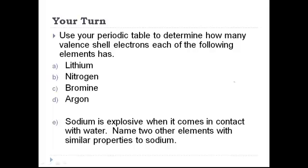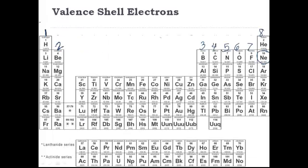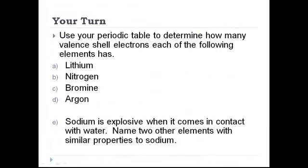All right, welcome back. We're going to use our periodic table to figure this out. The first one is lithium. Lithium is in group one. Since it's in group one, it must have one valence electron.